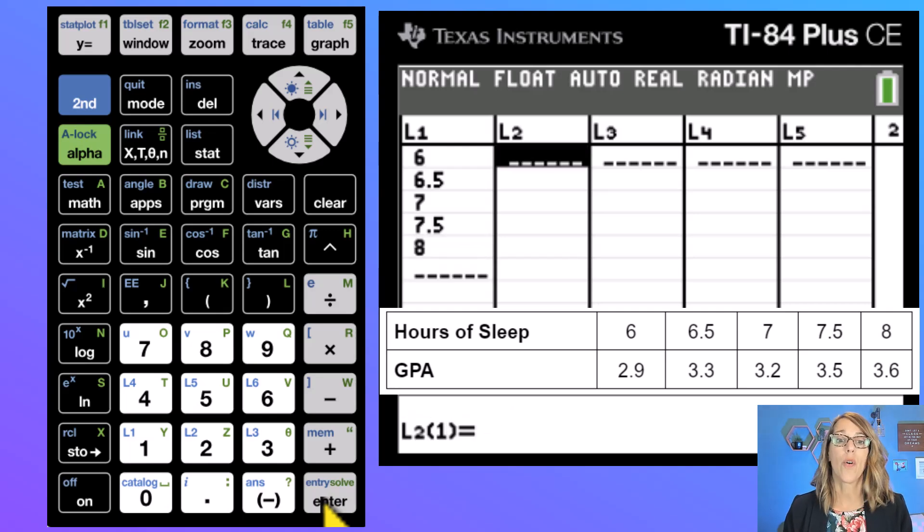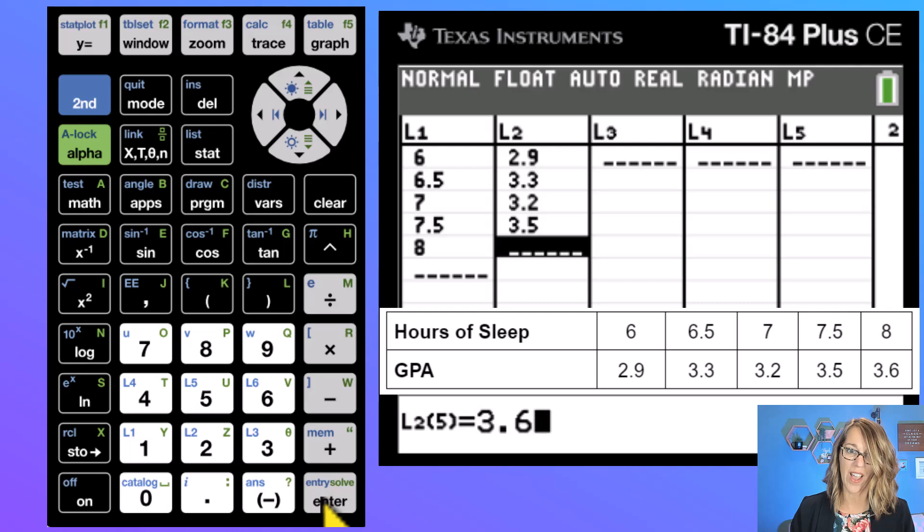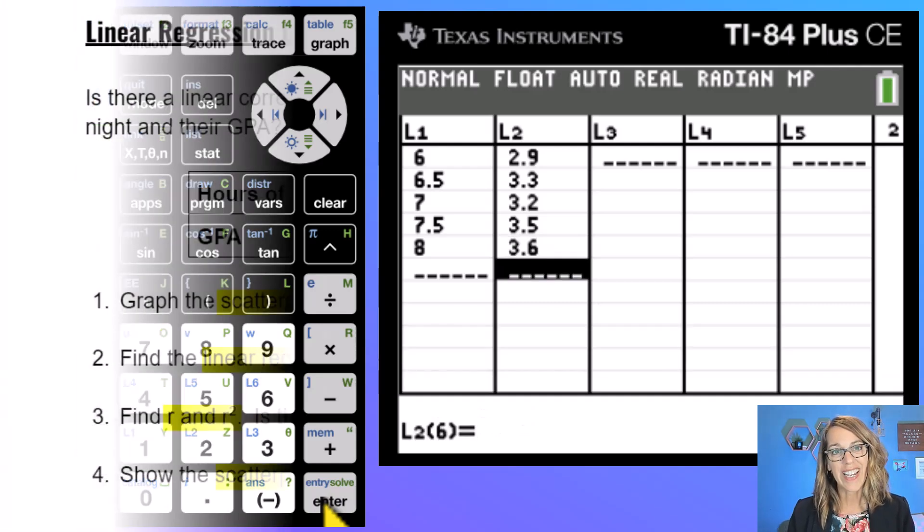Next we're going to arrow over and up to the top of the L2 list and let's go ahead and put in the GPAs. So we've got 2.9, 3.3, 3.2, 3.5, and 3.6. So we've got our data in here.